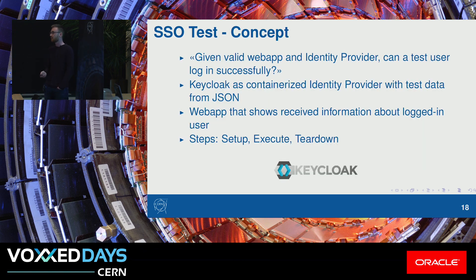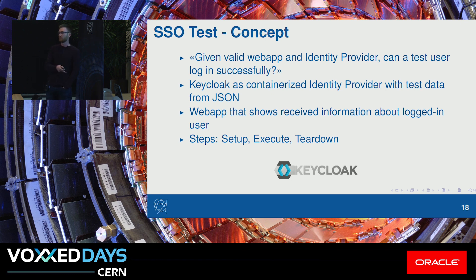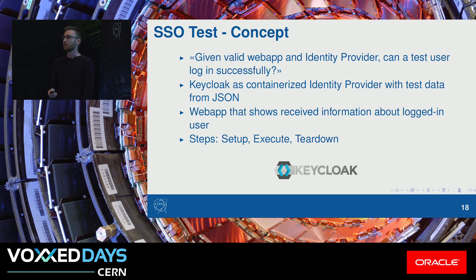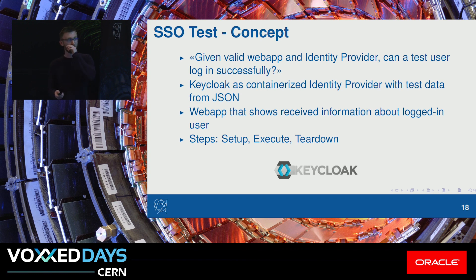Next up is the most complicated test we have. Our image needs to integrate with the CERN single sign-on service. We need to assert that given a valid web application and a valid identity provider, a user should be able to log in. We could run this test against the CERN identity provider, but that would be bad for two reasons: firstly, we'd be spamming the CERN identity provider; and secondly, if it changes, all of our previous commits are no longer testable in the same way.